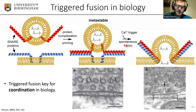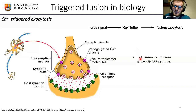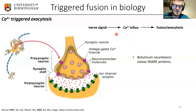Botulinum neurotoxins cleave the proteins responsible for controlling this fusion process — these are what we know as Botox toxins — and they are actually the most potent toxins known in biology. An interesting fact: the reason you shouldn't give honey to young children is that it might contain botulinum spores and therefore toxic poisons. Now we know.